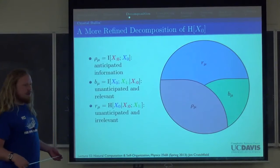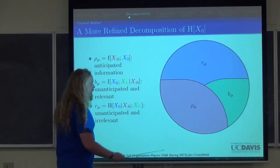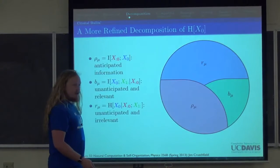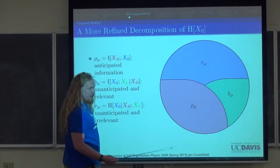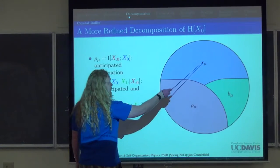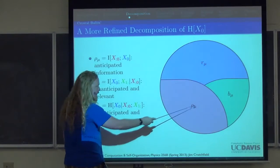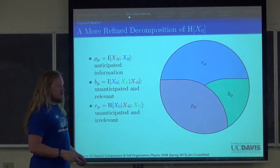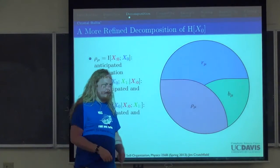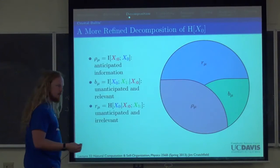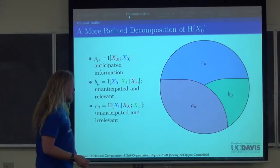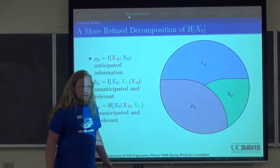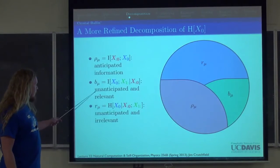On this diagram we can think about different processes. For a periodic process there's no entropy rate, so b_μ and r_μ are zero and all information is anticipated. For a fair coin flip (any IID process), there's no shared information with past or future, so all information is in r_μ. Most complex processes involve a mixture of all three: some anticipated, some ephemeral noise, and some bound temporal structure.